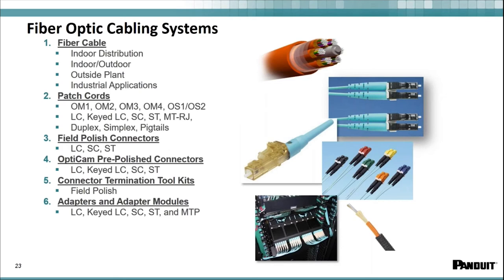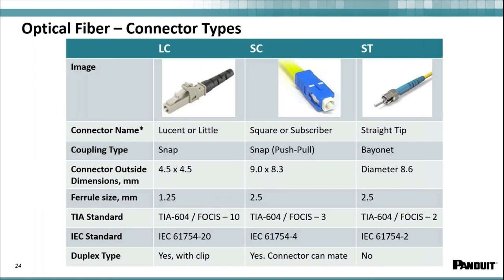The typical connector types you'll find in the market for fiber — with many manufacturers offering similar options — are the LC, SC, ST (bayonet style), push-pull, and snap connectors, with snap being the most commonly used fiber optic connector today.